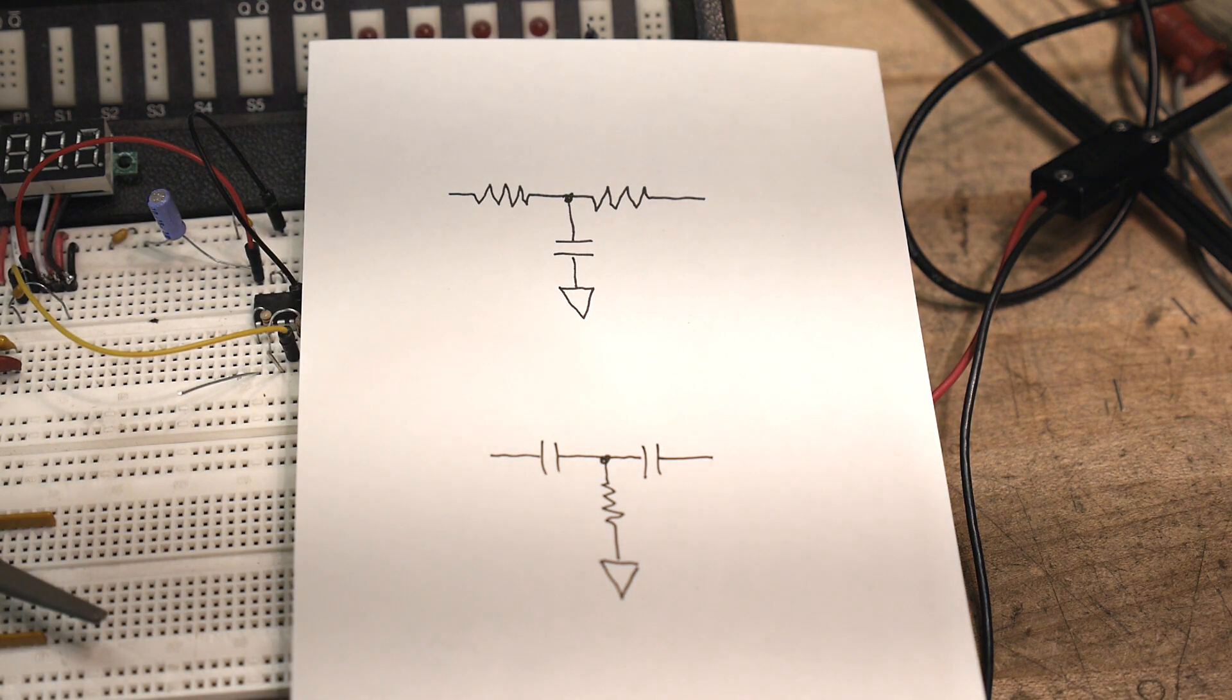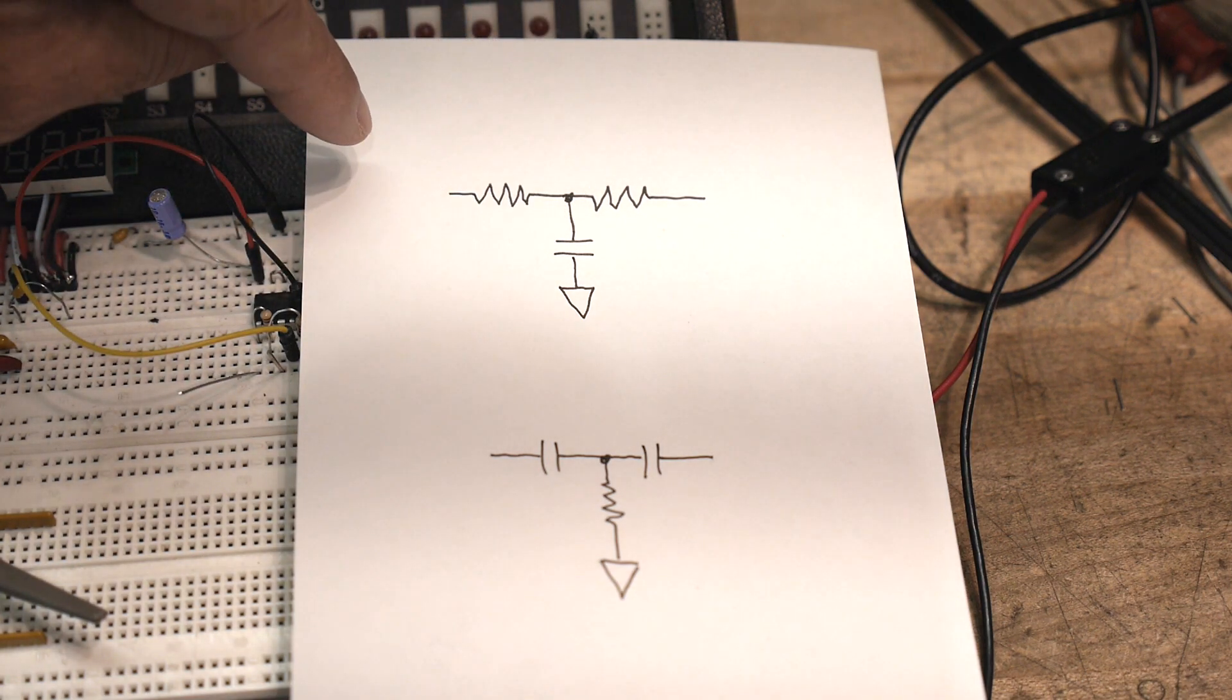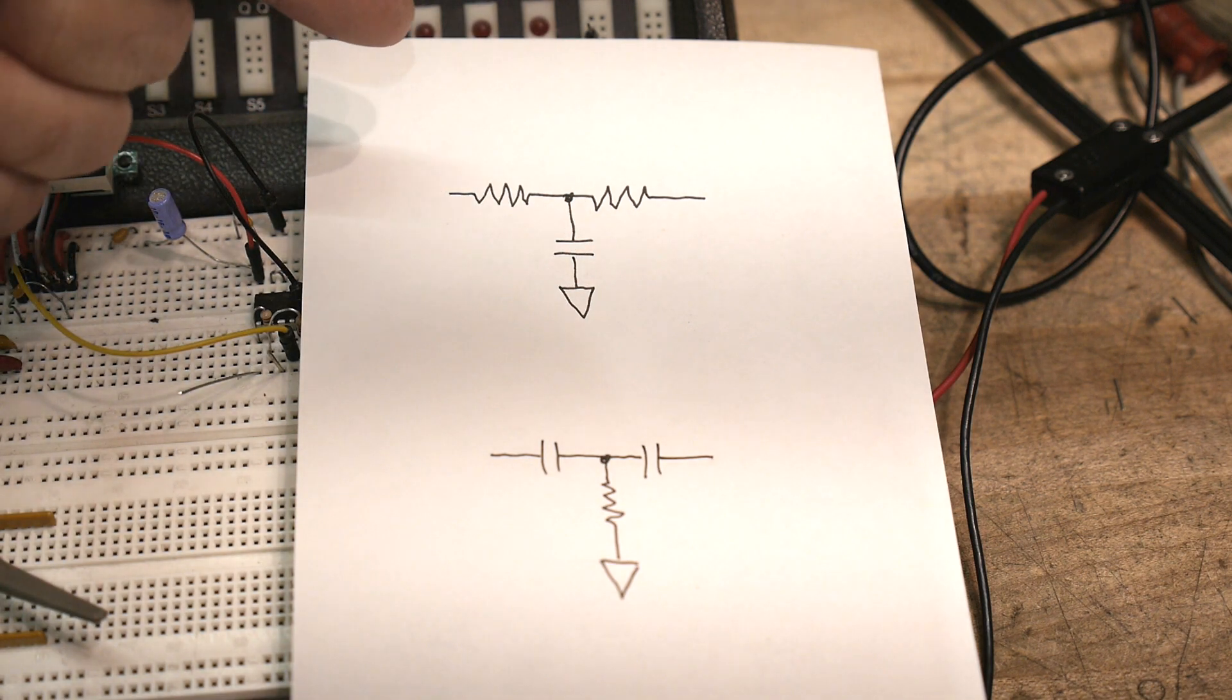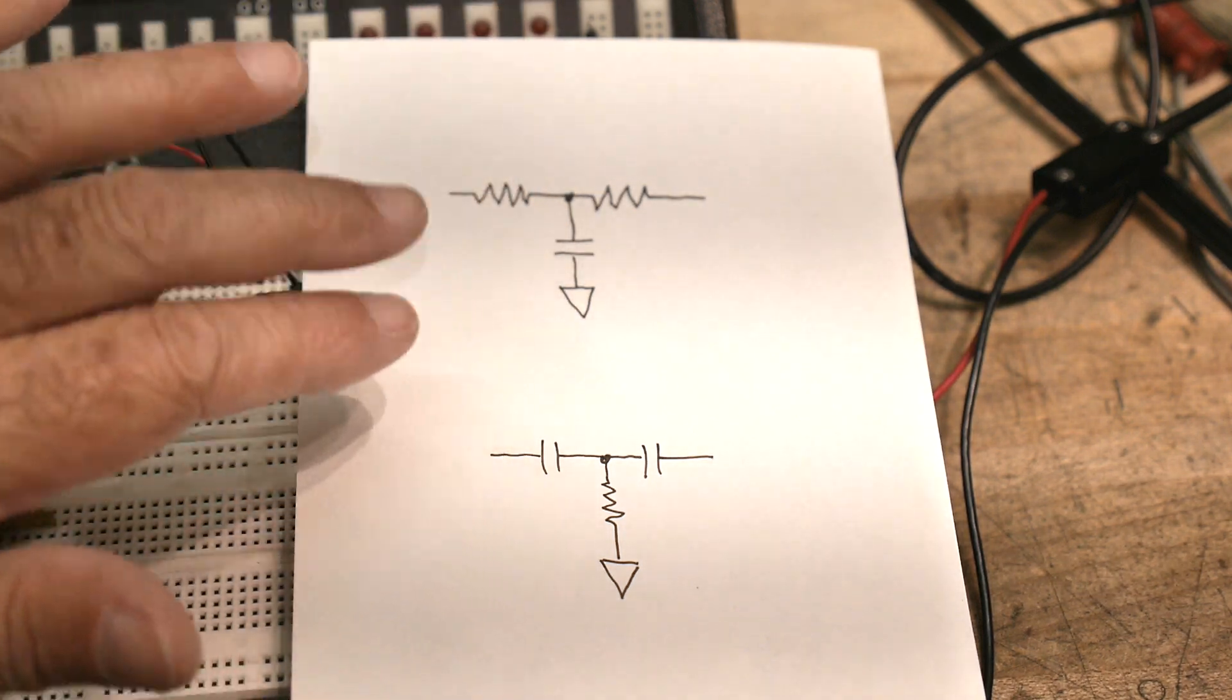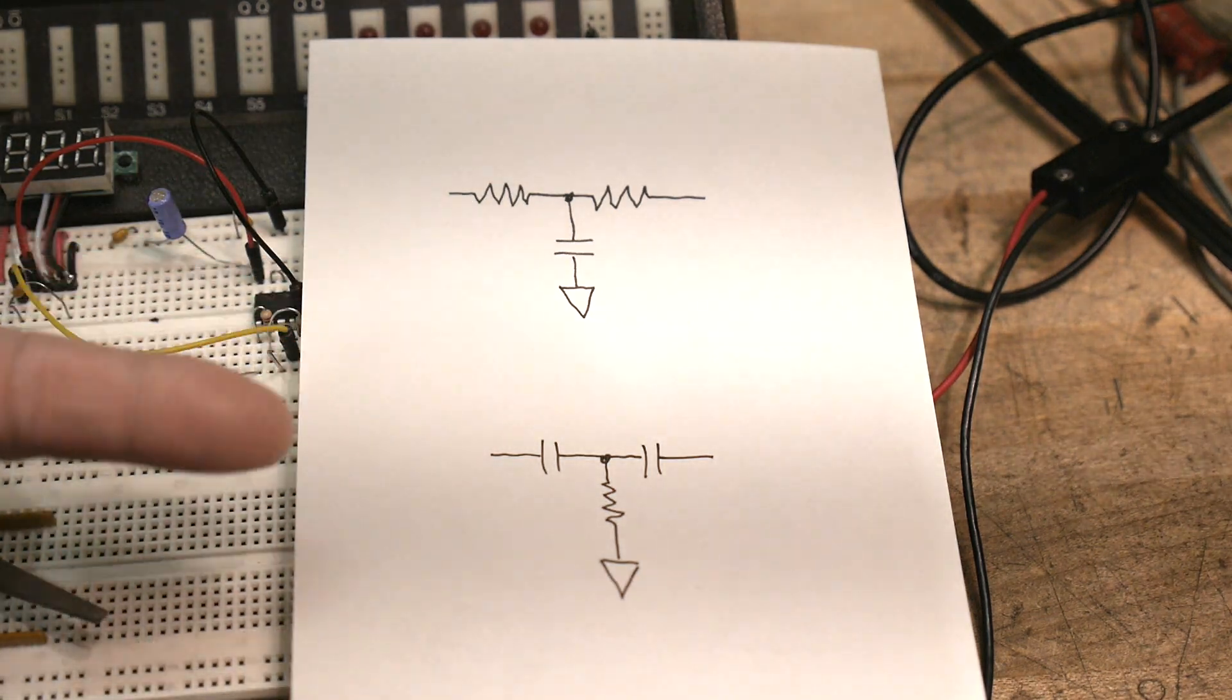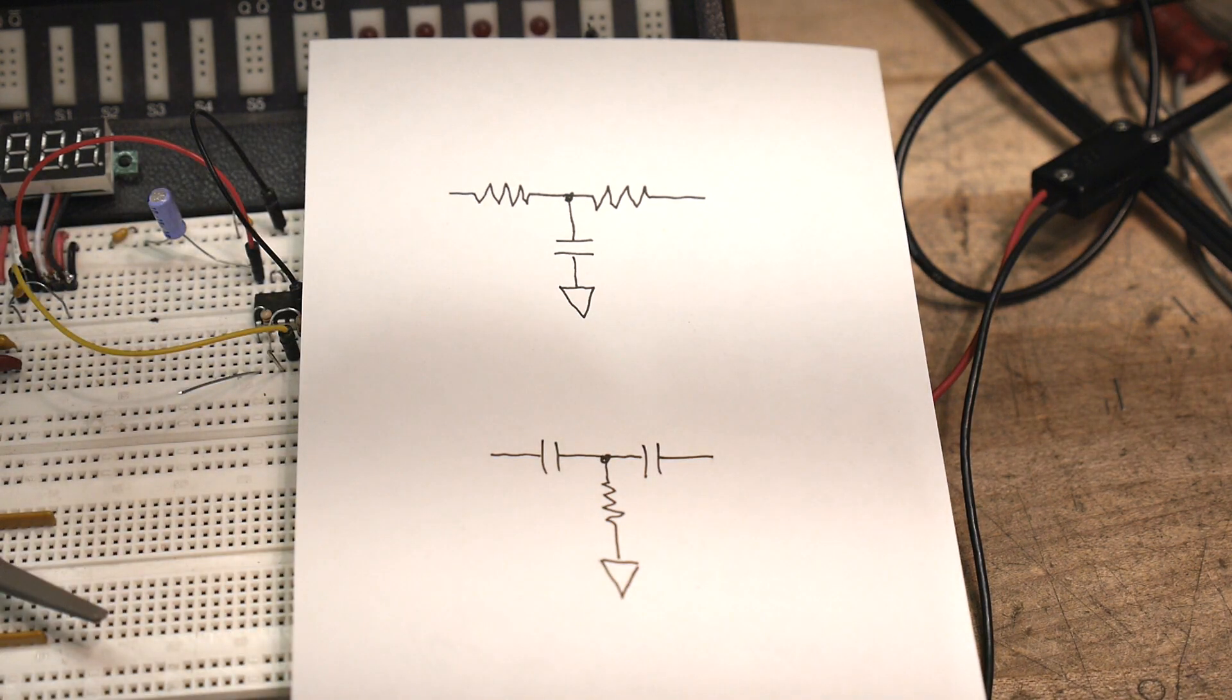We can see that this is going to be a low pass. The low frequencies will go through here and they won't go through the capacitor, but the high frequencies will come in, they'll see that capacitor and run through it and hit ground so they'll get killed. This one's just the opposite, the high frequencies will go shooting through, but the low frequencies will have a hard time getting in. So these should have opposite characteristics.